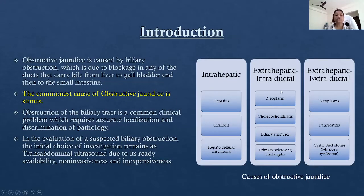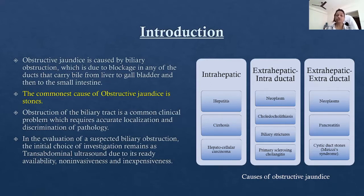Obstructive jaundice is caused by biliary obstruction, which is due to blockage in any of the ducts that carry bile from the liver to the gallbladder and then to the small intestine. The causes of obstructive jaundice can be divided into intrahepatic and extrahepatic. Intrahepatic — the most common causes are hepatitis, cirrhosis, and HCC.